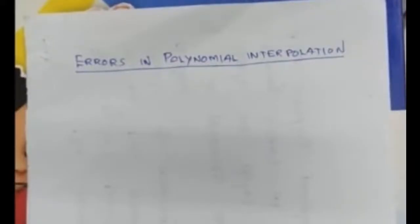Let's derive a formula for the errors in polynomial interpolation. In the last class we have seen that polynomials can be used for interpolation — a polynomial of suitable degree could be used as an interpolating function. The corresponding polynomial is called the interpolating polynomial, and the interpolation is called polynomial interpolation.